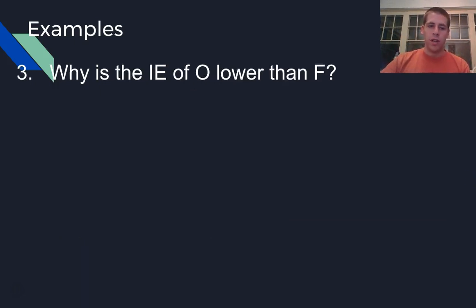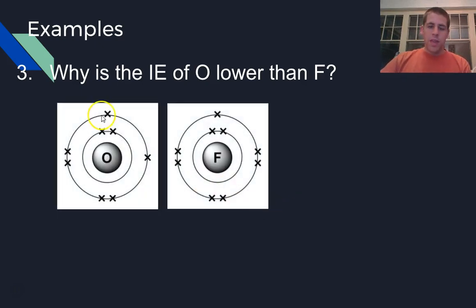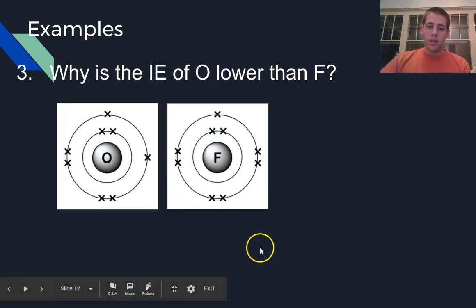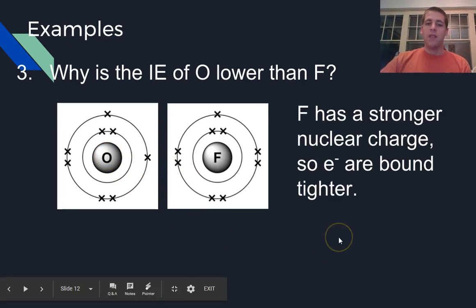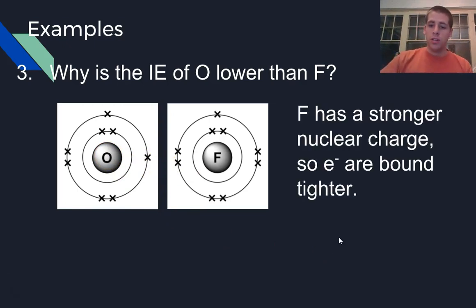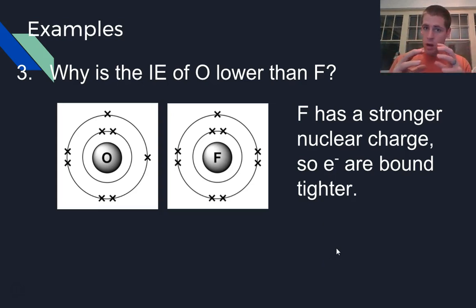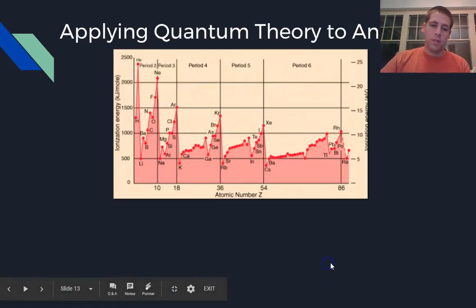What about oxygen versus fluorine? Why is oxygen lower in ionization energy than fluorine? They have the same number of energy levels; the only difference is the number of protons and electrons. Fluorine has a larger nuclear charge, so it's holding onto its electrons a little bit stronger. Its radius is a little bit smaller, which makes sense. So it's going to be harder to remove an electron from fluorine than from oxygen.